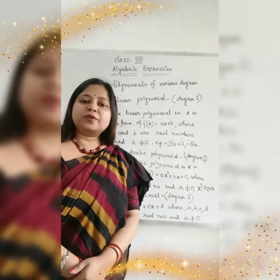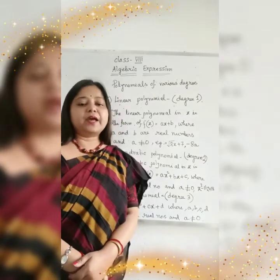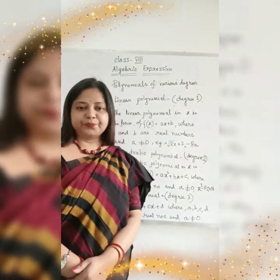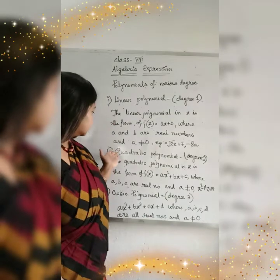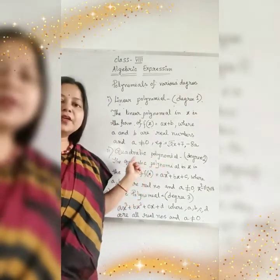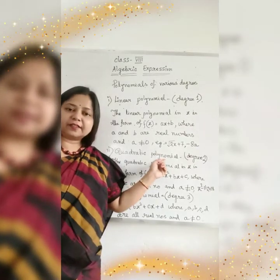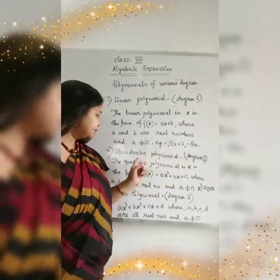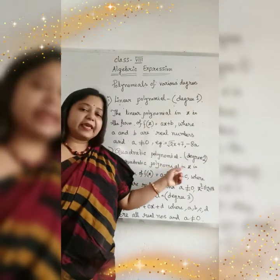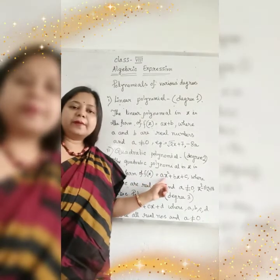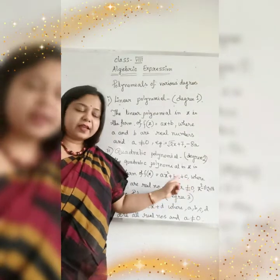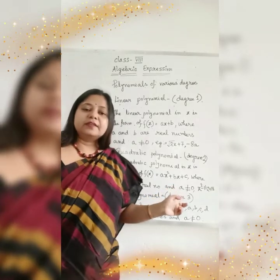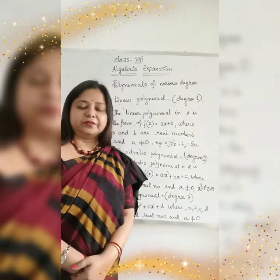Why is it called linear polynomial? Because x's power is 1. In this 2x plus 5 expression, 2 and 5 are real numbers and a is not equal to 0. Our next point is quadratic polynomial. Quadratic polynomial means when the polynomial or algebraic expression has maximum degree 2, that is called quadratic polynomial. x is in the form of ax square plus bx plus c, where a, b, c are real numbers and a is not equal to 0.